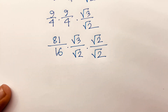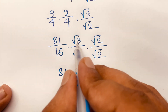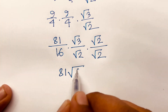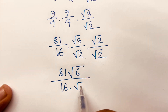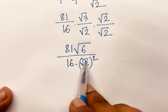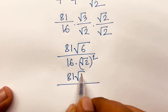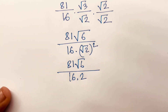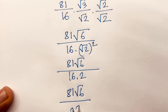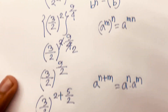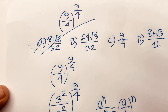We have 81/16 times √(3/2). Writing √(3/2) = √3/√2, and rationalizing: √3 · √2 = √6, and the denominator becomes 16 × √(2²) = 16 × 2 = 32. So the final answer is 81√6 / 32. Option A is the correct answer.